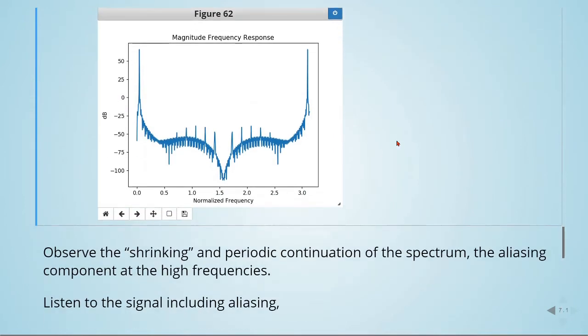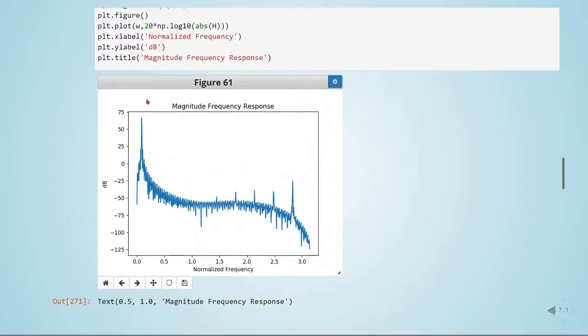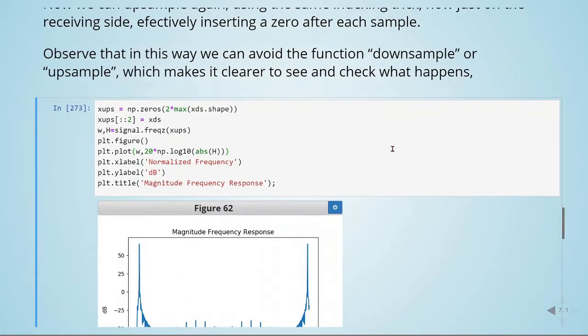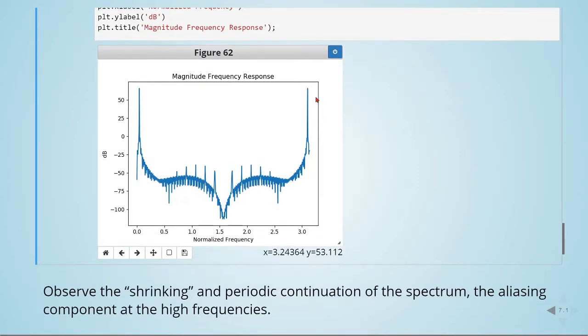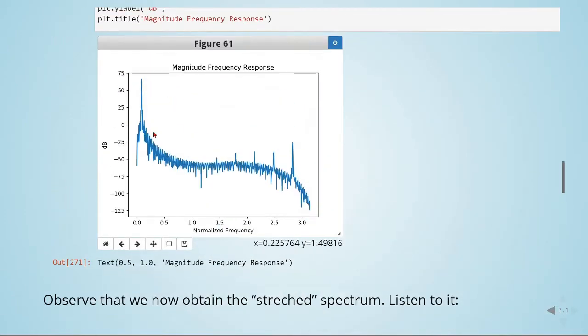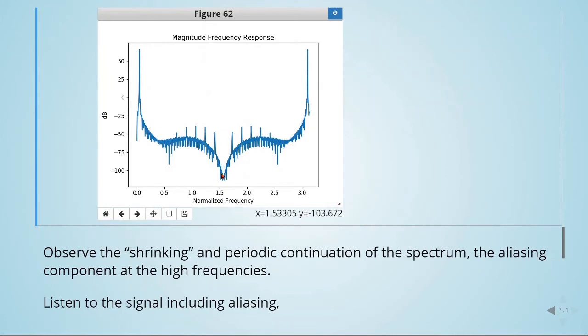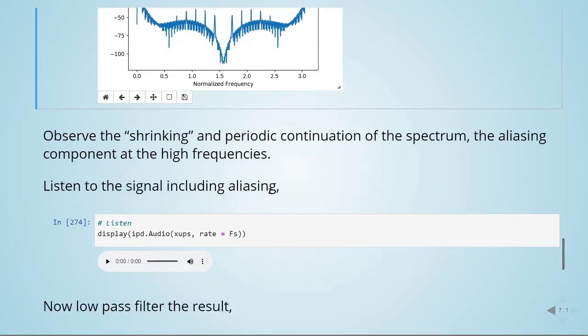Now we have the shrinking and periodic continuation of the spectrum, so we have these aliasing components at high frequencies. This was the low pass version downsampled. Now we upsample by inserting zeros and we have this here. We have all these aliasing components, so this part is effectively this part here. We have the shrinking and we can listen.